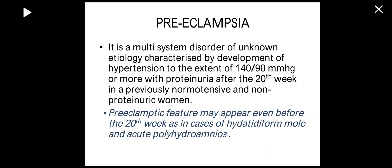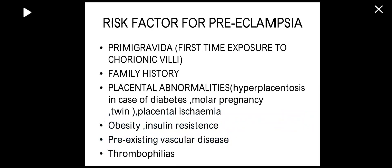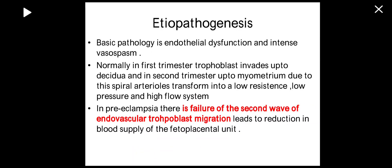Risk factors also include primigravida patients, family history, thrombophilias, obesity, and pre-existing hypertension. The basic etiopathogenesis of preeclampsia involves endothelial dysfunction and intense vasospasm, leading to damage of the capillary endothelial system.